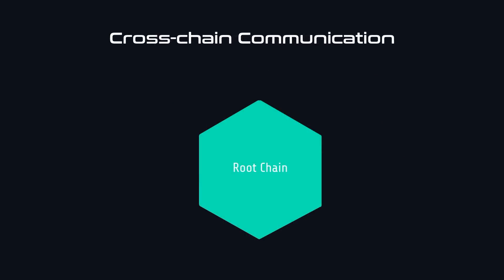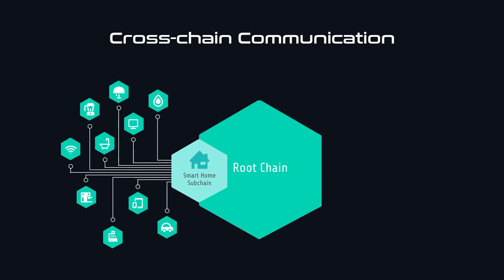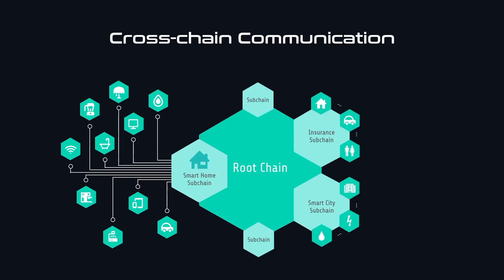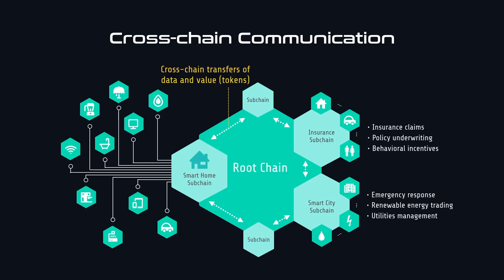Here's an example of new use cases that cross-chain communication can enable. A smart home service provider's sub-chain uses smart contracts to automate and manage many types of smart devices. The sub-chain also stores valuable data such as status of specific devices, energy consumption, and utilities data. Using cross-chain communication, this data can be seamlessly sent to other sub-chains. For an insurance sub-chain, this data can be used for claims and underwriting. For a smart city sub-chain, this data can be used for real-time emergency response and energy optimization.